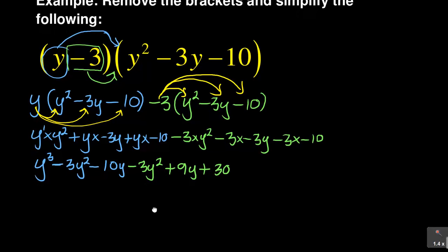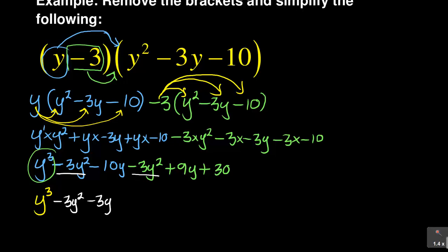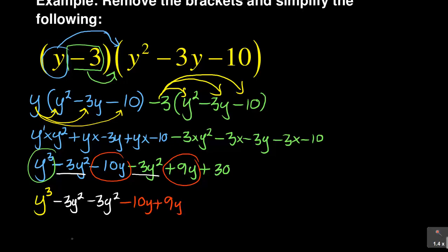At this stage we need to collect like terms. Check what we have: y cubed is alone, so we write y cubed. Then we have minus 3y squared and minus 3y squared in common, so we bring them together as minus 3y squared minus 3y squared. After that, we have minus 10y plus 9y in common. And lastly, only 30 remains, so plus 30.